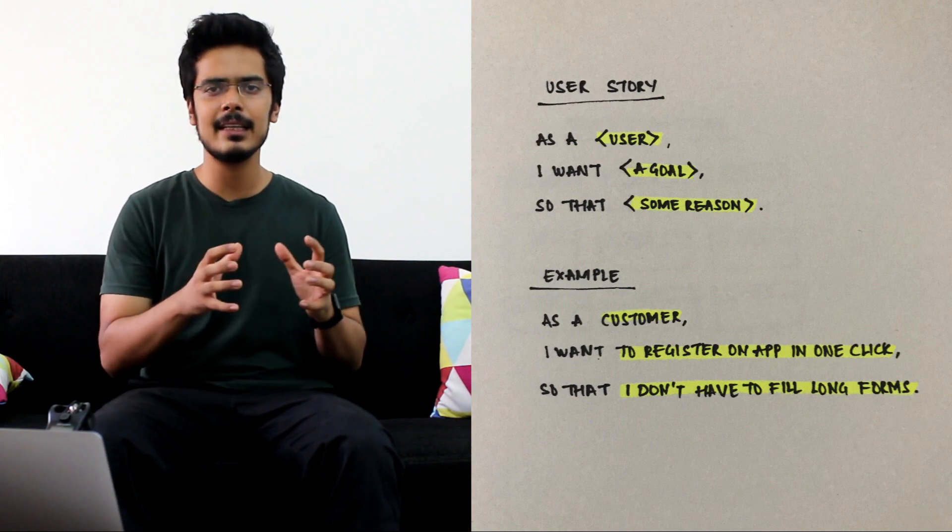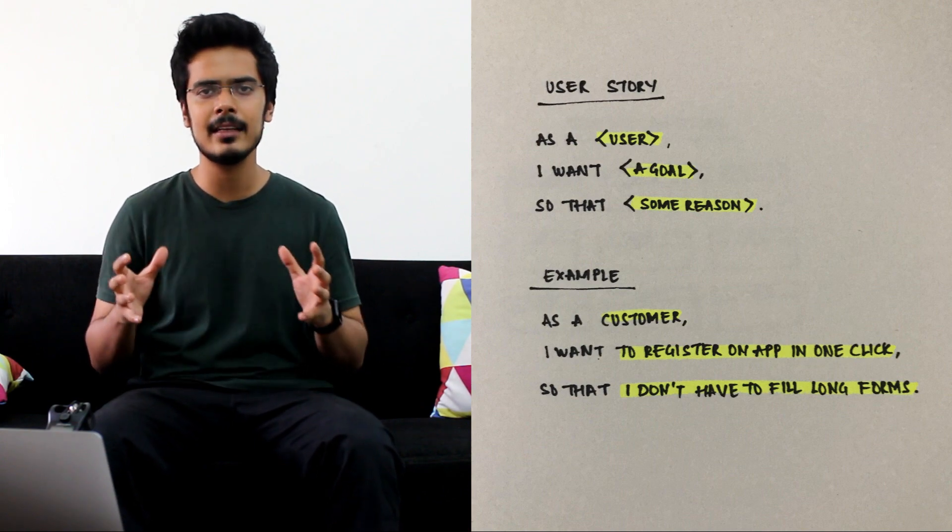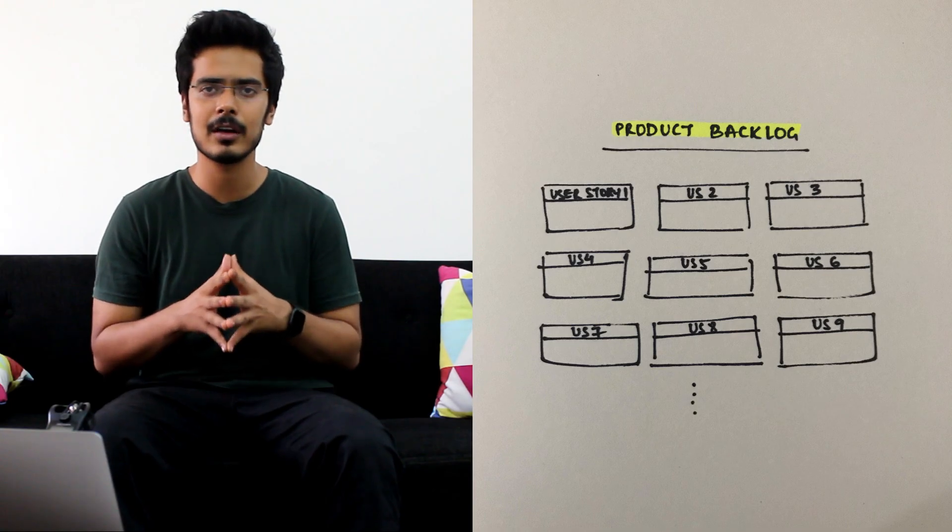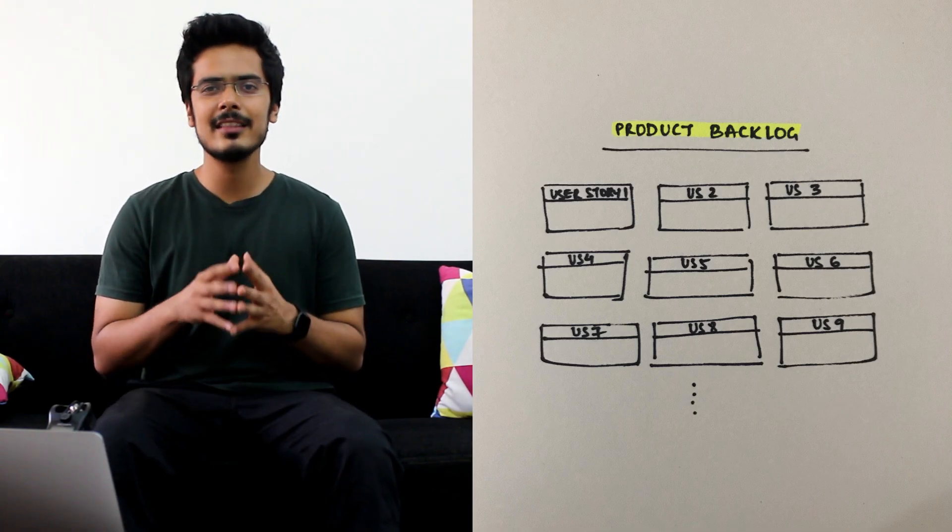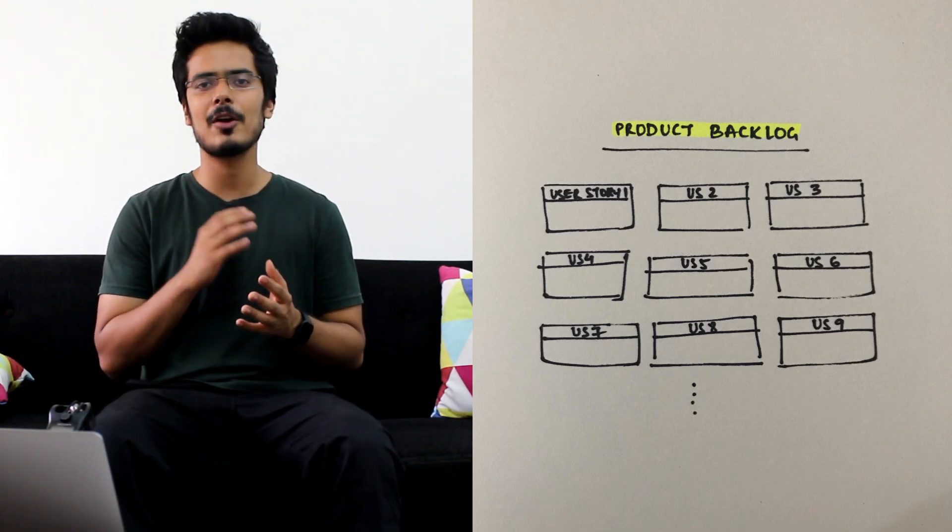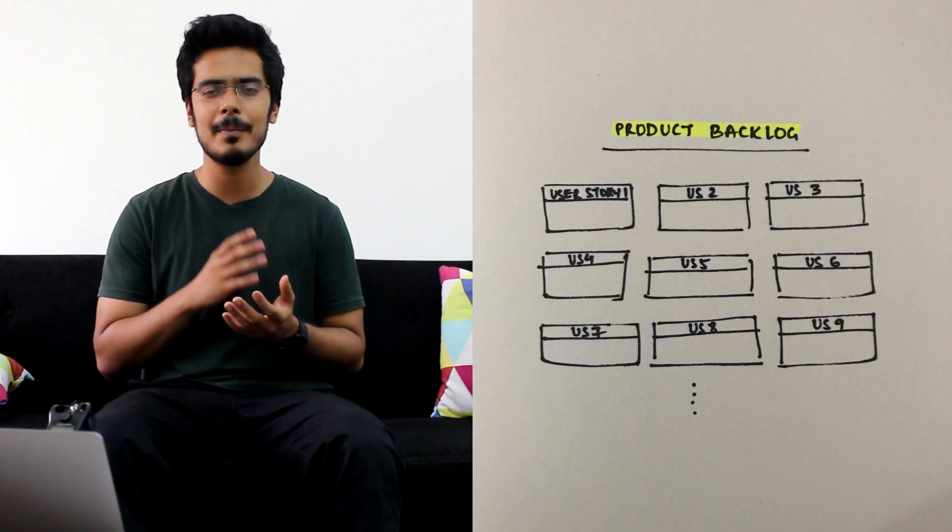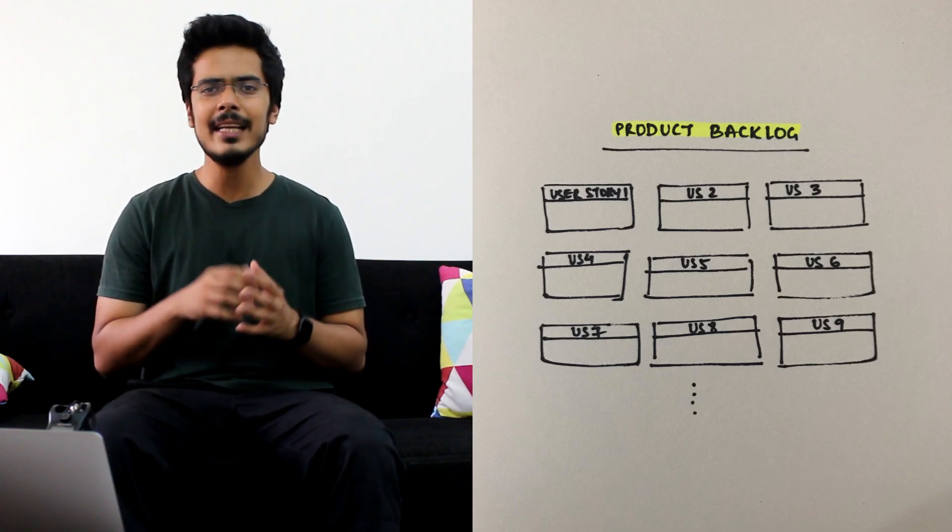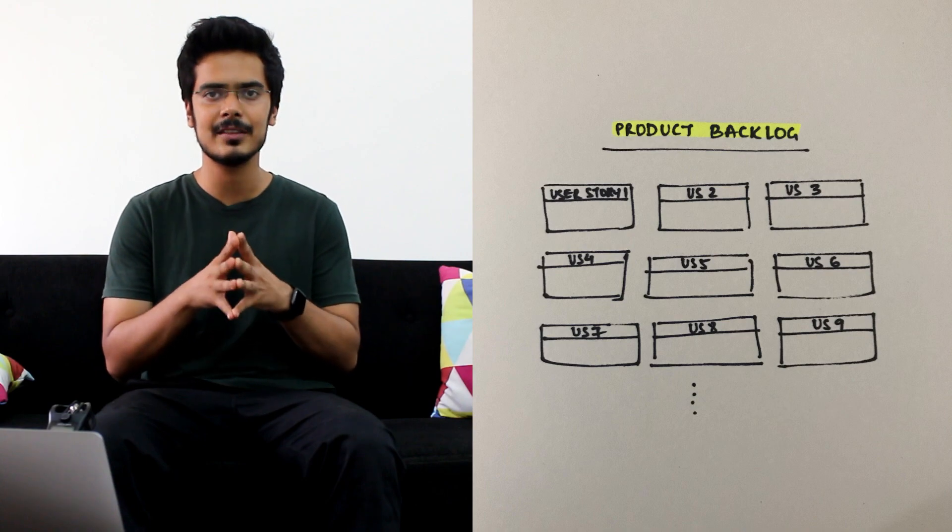Now all of these user stories are basically combined and put together in something called a product backlog. The role of the product owner is to ensure that all the stories in this product backlog are the right ones to make this product awesome. So in general he or she basically gives the product a direction.